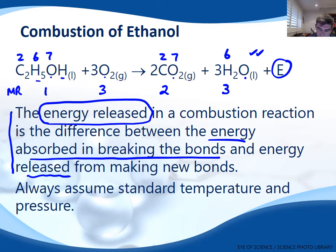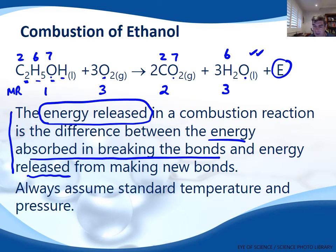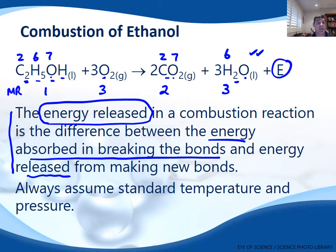We're going to break bonds between carbons and hydrogens, carbons and oxygens, oxygens and hydrogens, and oxygens and oxygens on the reactant side, and we're going to form bonds between carbon and oxygen and hydrogen and oxygen on the product side. The sum total of that gives us the energy released in the combustion reaction.